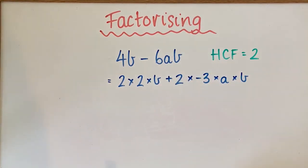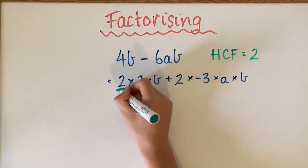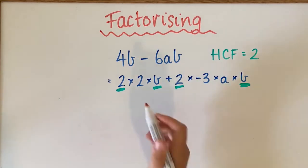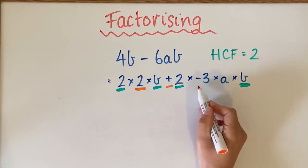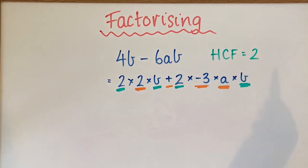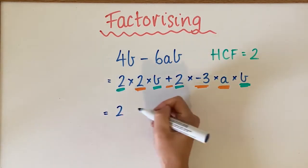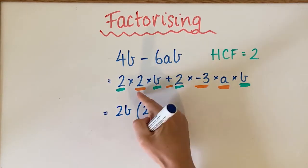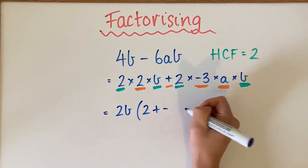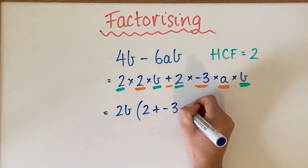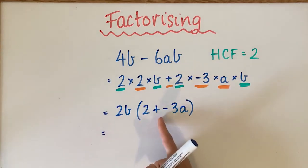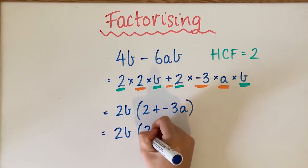We know the highest common factor is 2, so we color the 2s on either side. But they also share the factor B. Everything that's not common — the 2, the plus sign, the negative 3, and the A — all go inside the brackets. So we end up with 2B out the front, and inside the brackets we write 2 plus negative 3A.